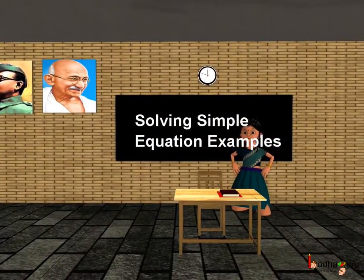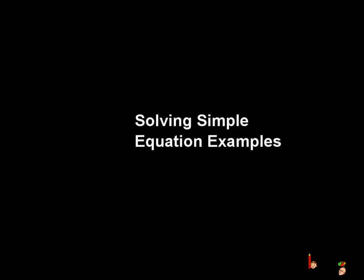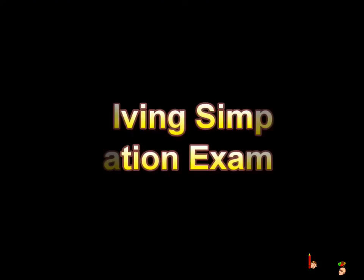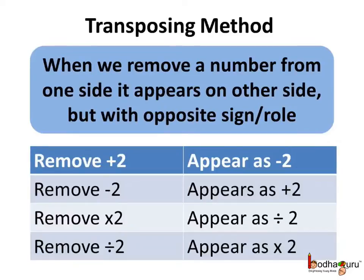Good morning children. Now we know how to solve an equation and find the root of the equation by using the transposing method. Let us take more examples and understand it better. First, let us refresh our memories. How do we solve a simple equation using the transposing method? When we remove a number from one side of the given equation, it appears on the other side but with opposite sign or role.